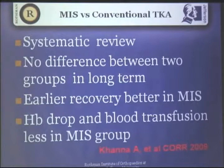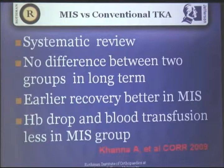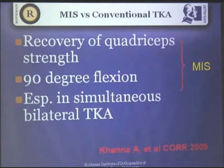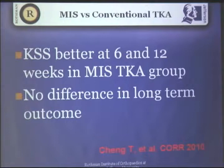There have been some systematic reviews. A systematic review by Kana showed no difference between MIS and conventional groups with regard to long-term outcome, but short-term outcomes were better in the MIS group — including straight leg raising, range of motion, and functional parameters. The MIS group also lost less blood, required fewer blood transfusions, achieved 90-degree flexion sooner, and had earlier quadriceps recovery, which was particularly true for bilateral total knee replacement. Knee society scores were better at earlier time points, but again, long-term there was no difference.